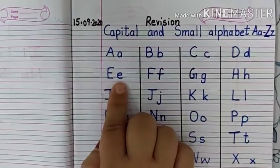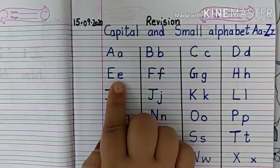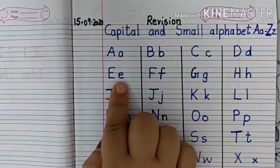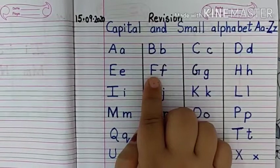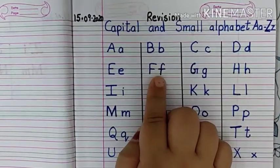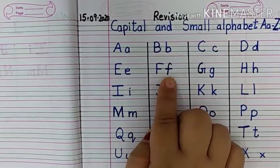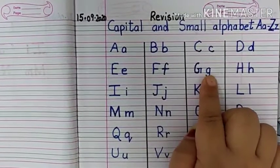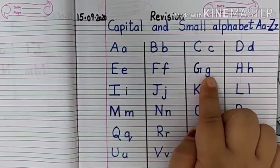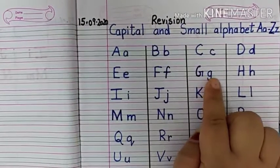Next, capital E, small e, E says F. Next letter, capital F, small f, F says F. Capital G, small g, G says G.